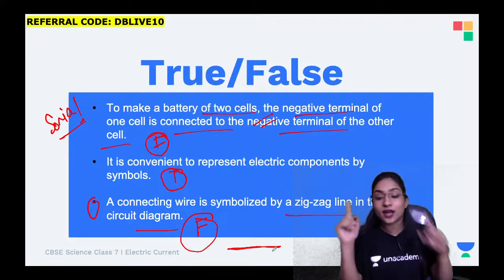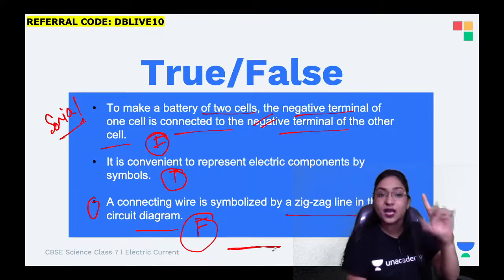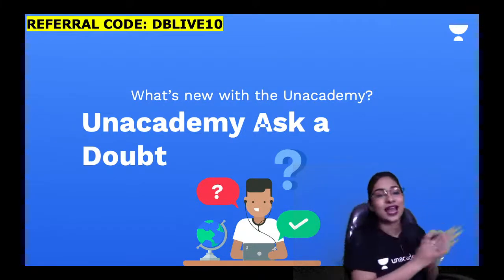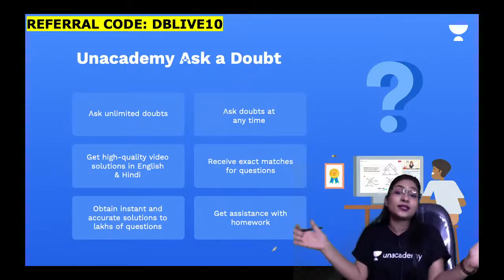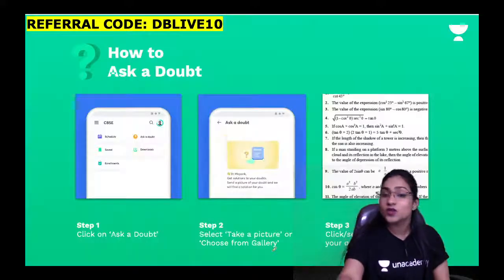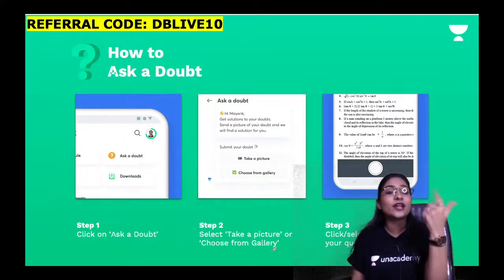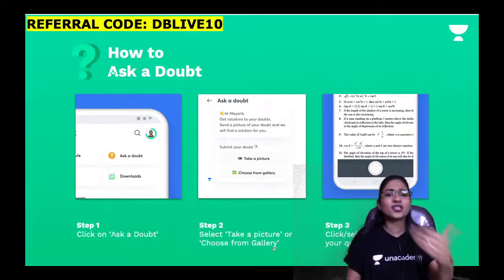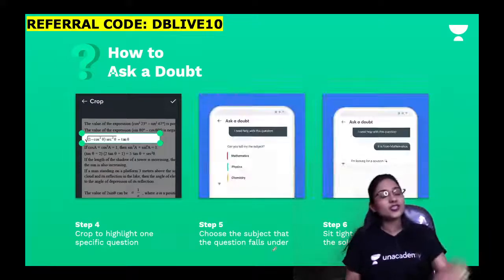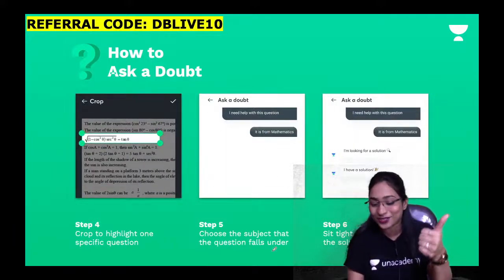Do not leave the class because I am going to share the challenge of the day and the live quiz code. The live quiz will begin in just five minutes. On Unacademy, we have the Ask a Doubt feature where you can ask unlimited doubts at any time and receive high quality video solutions in English and Hindi. Just go on your profile, click Ask a Doubt, you get two options: take a picture or choose from gallery. Crop the picture to highlight one question, choose the subject, and you will receive the solution very soon.